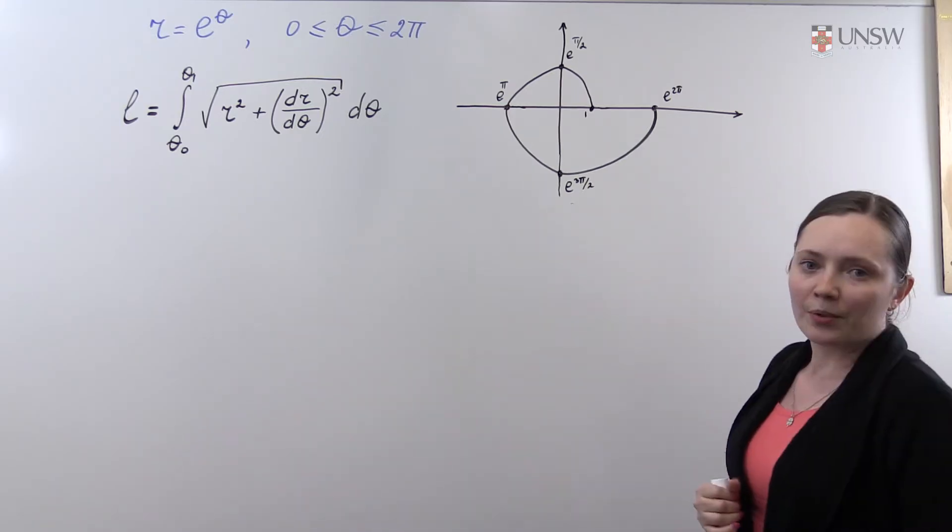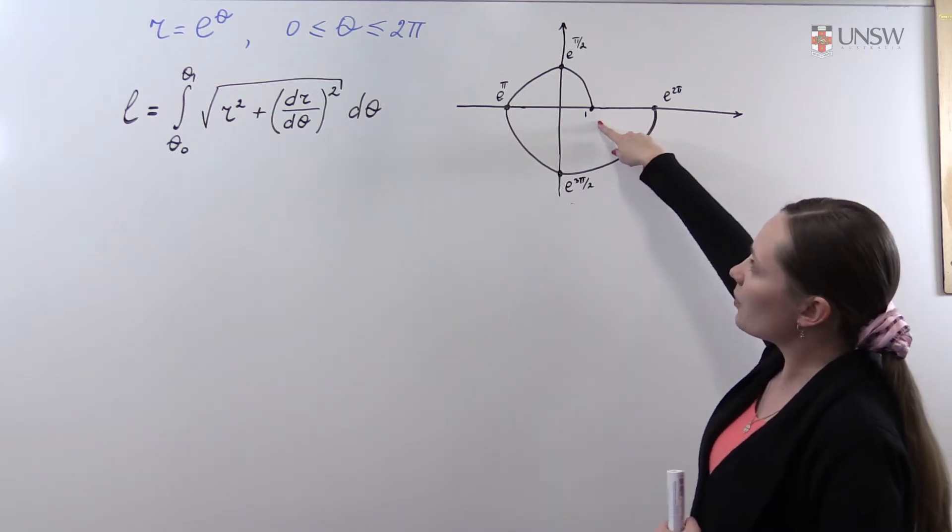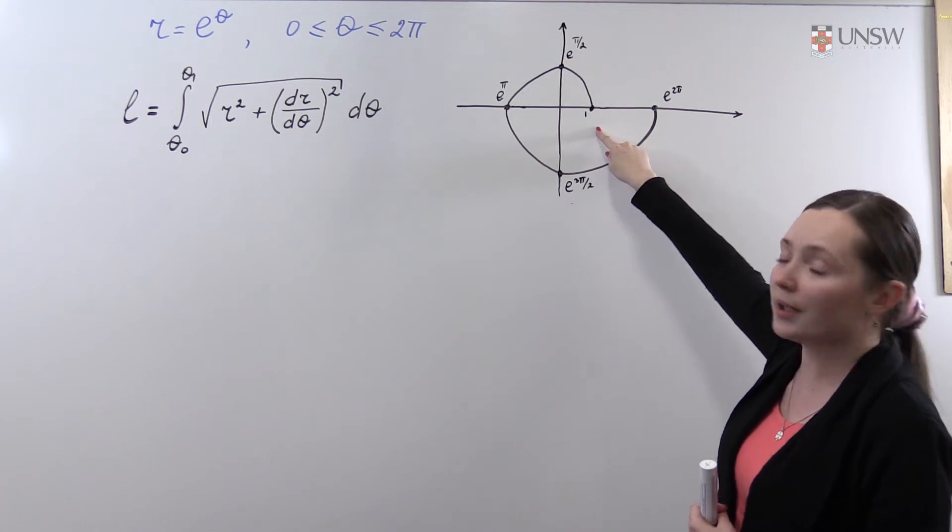Let's see what the curve is. We start from the point theta equals 0, in which case r equals 1.